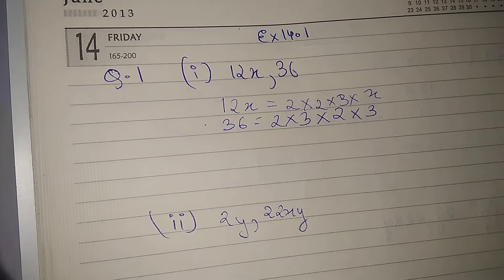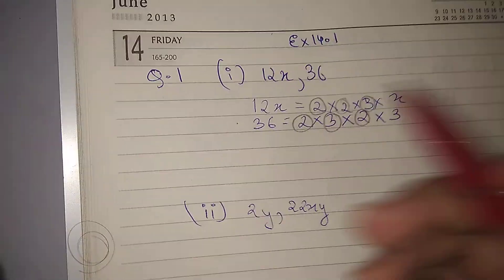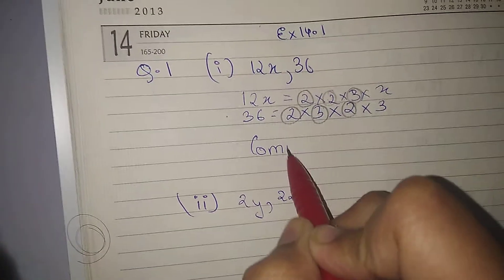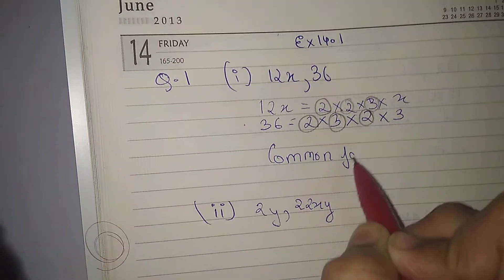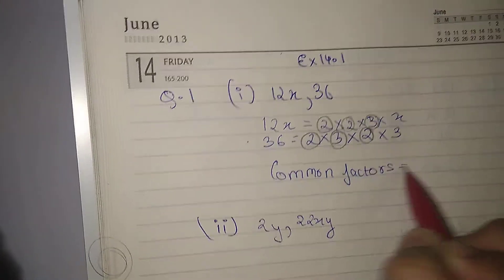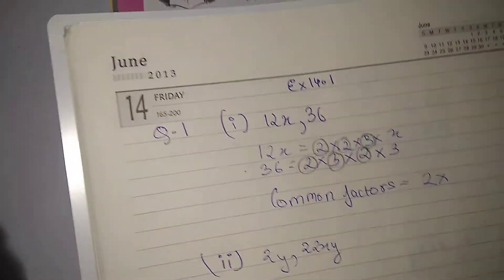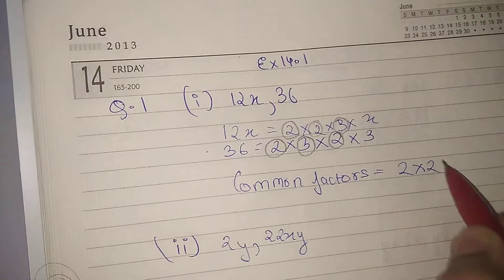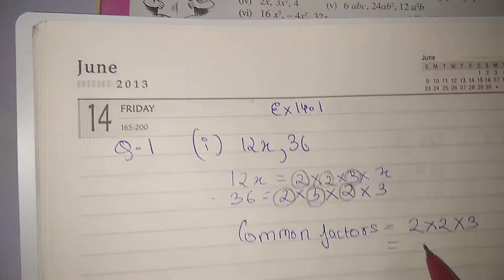Now we are going to find the common term. So our common factors will be the ones which we have circled, which is 2 into 3, which is equal to 12.